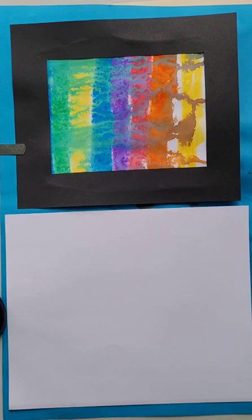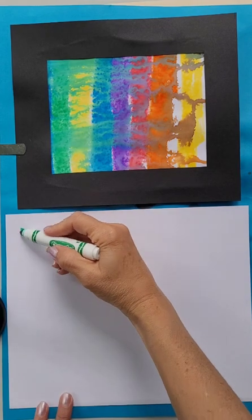All right, we are making one of my very favorite art projects today. This is basically an abstract art piece made from markers and water, and then putting a little frame around it. You can use any colors that you want.